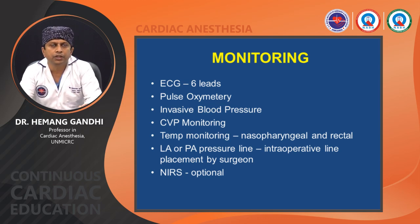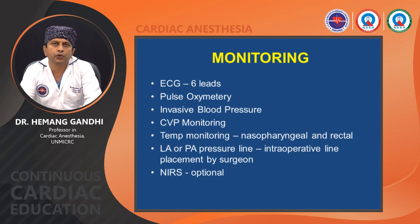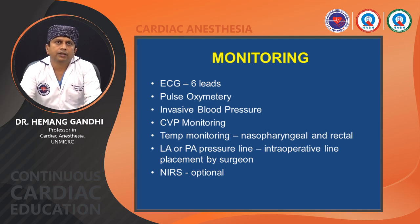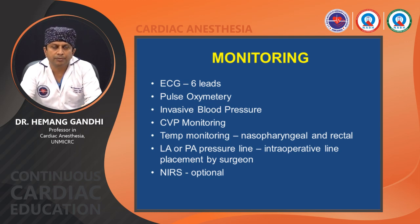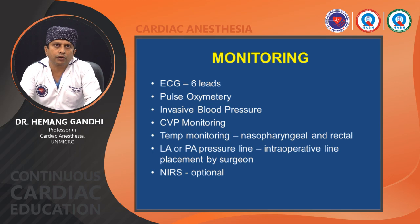Monitoring for TAPVC patients includes six-lead ECG, pulse oximetry, invasive blood pressure, CVP, and temperature monitoring. If total circulatory arrest is planned, use two-site temperature monitoring — nasopharyngeal and rectal. Left atrial or pulmonary artery pressure lines, usually placed by the surgeon intraoperatively, are very helpful postoperatively to monitor LA or PA pressures. NIRS is optional if the facility is available.